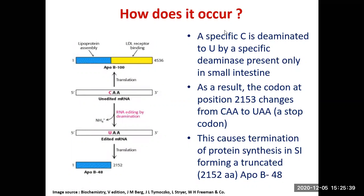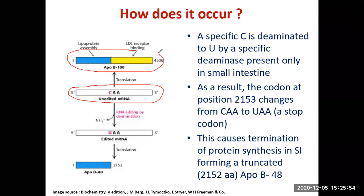So you have a messenger RNA — this is the unedited mRNA — and in the liver, when it gets translated, it synthesizes ApoB100, the longer protein made up of 4536 amino acids. But in the small intestine, codon number 2153 — CAA — the specific C in codon 2153 gets deaminated by a deaminase which is present only in the small intestine and not in the liver. This C is deaminated to U.